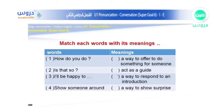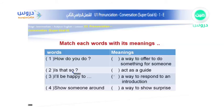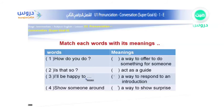Number two: 'Is that so?' What do you think? The choices are: a way to offer to do something for someone, act as a guide, or a way to show surprise. Excellent — yes, it is a way to show surprise. 'Is that so' means you are surprised about that. Number three: 'I'll be happy to.' Is it a way to offer to do something for someone, or act as a guide?